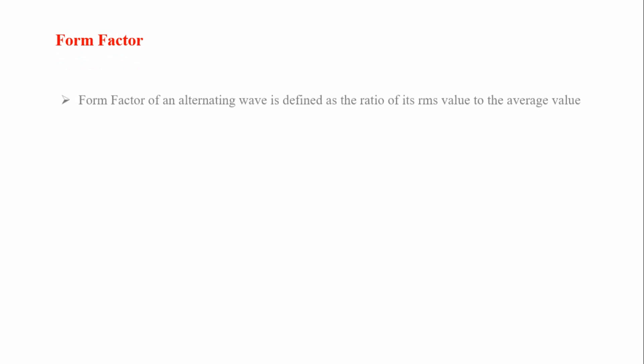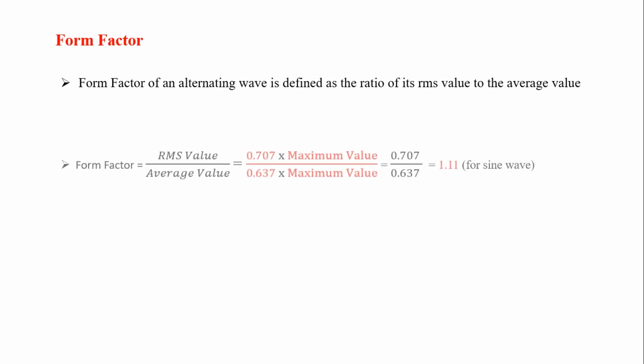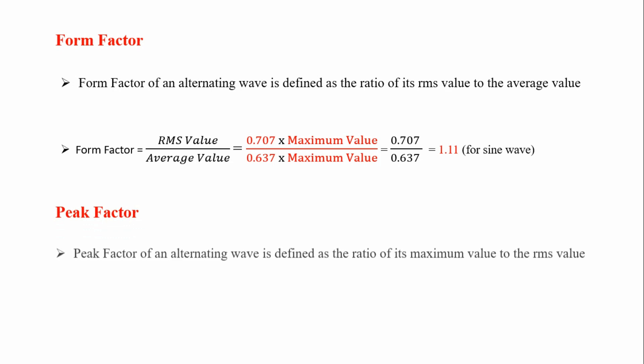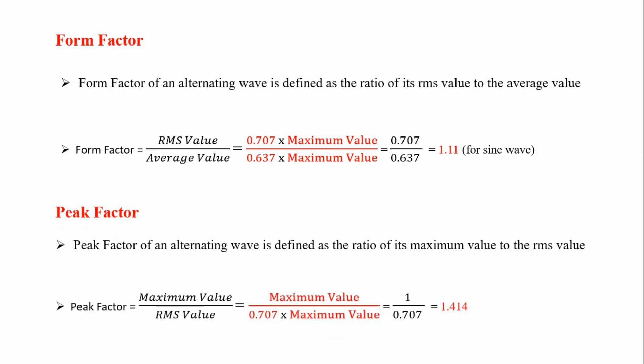Once we have the RMS value and average value, we can easily calculate form factor and peak factor. Form factor is the ratio of RMS value to average value: 0.707 Im / 0.637 Im = 1.11. Peak factor is the ratio of maximum value to RMS value: Im / (0.707 Im) = 1.414.